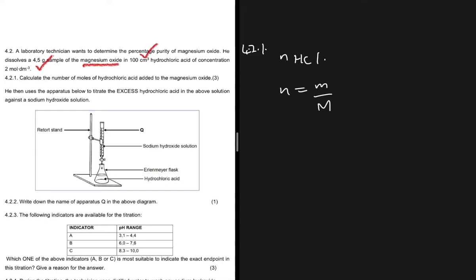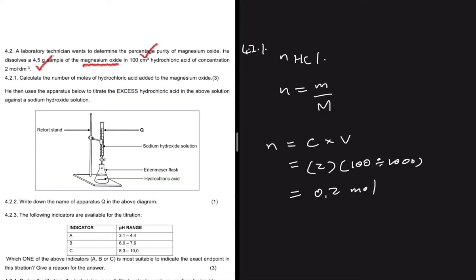The number of moles equals concentration multiplied by volume. The concentration is 2 mol/dm³ and the volume is 100 cm³, which we convert to dm³ by dividing by 1000. Putting that into a calculator gives 0.2 moles. That is the number of moles of hydrochloric acid added to the magnesium oxide.